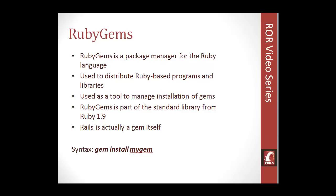RubyGems is a package manager for Ruby on Rails — basically little pieces of code that you can plug into your Rails site. Rails itself is actually a gem. Once you have RubyGems, you can use the syntax 'gem install' followed by the name of the gem. They can be thought of as modules or plugins, used to distribute Ruby-based programs and libraries — just chunks of code you can utilize in your app. RubyGems is part of the standard library from Ruby 1.9 onward, and we will be using Ruby 1.9.3. Rails itself is a gem you can install through RubyGems.